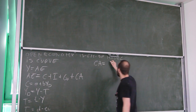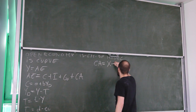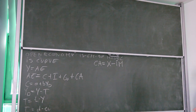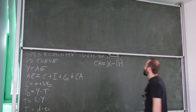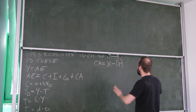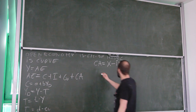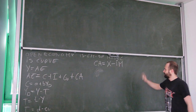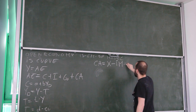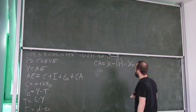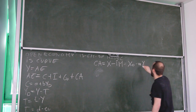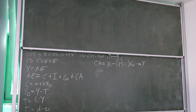Investment is d minus e times the interest rate. The new thing we have here is the current account. Current account for us is going to be simply exports minus imports. In reality we should also have income payments, but to keep the model simple, this is all we need.